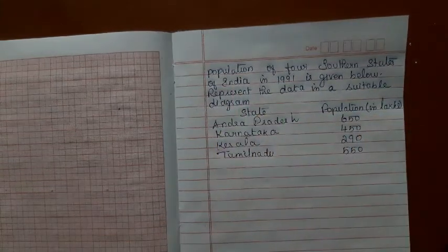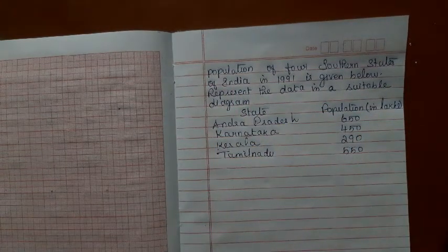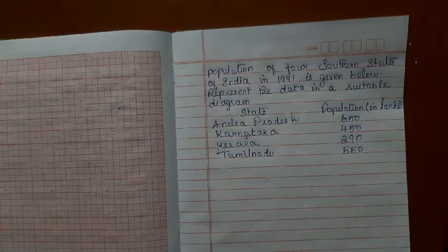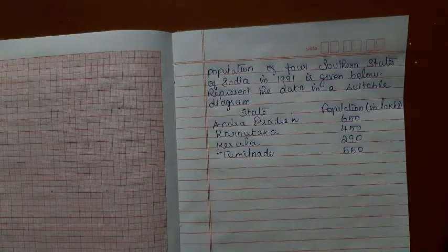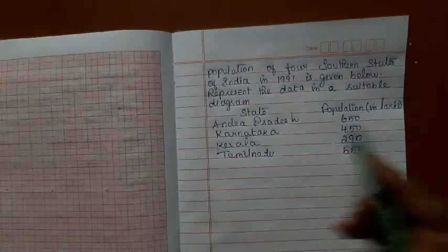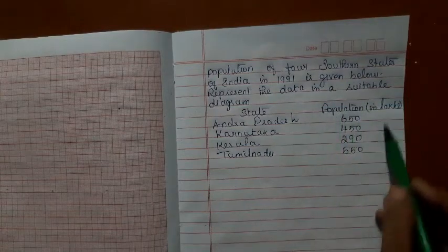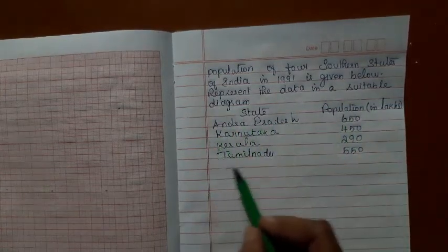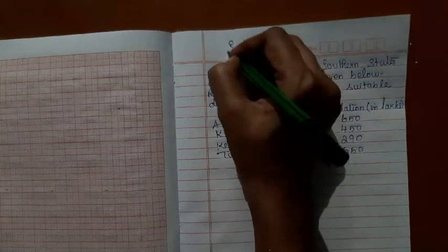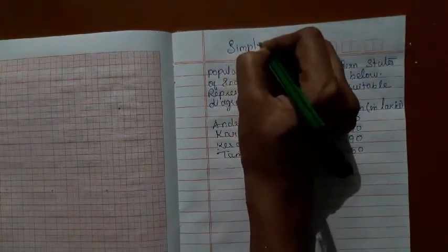Consider this problem. Population of 4 southern states of India in 1991 is given below. Represent the data in a suitable diagram. The data, the population is classified based on only one characteristic. So you can draw a simple bar diagram.